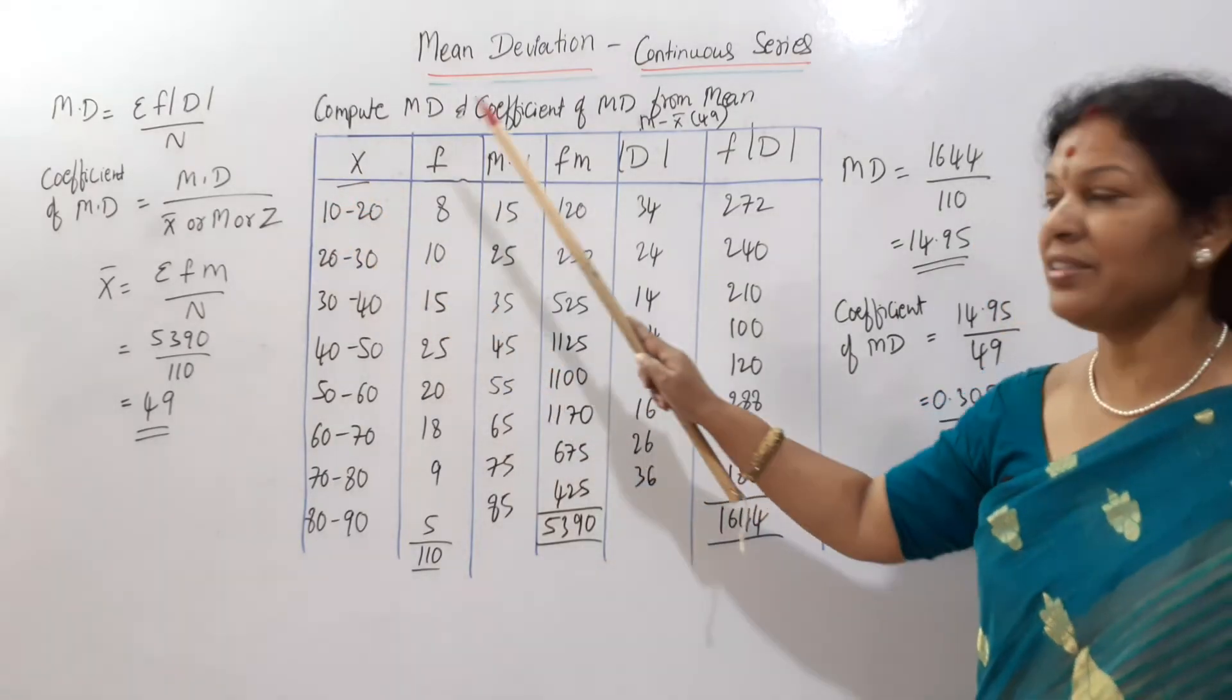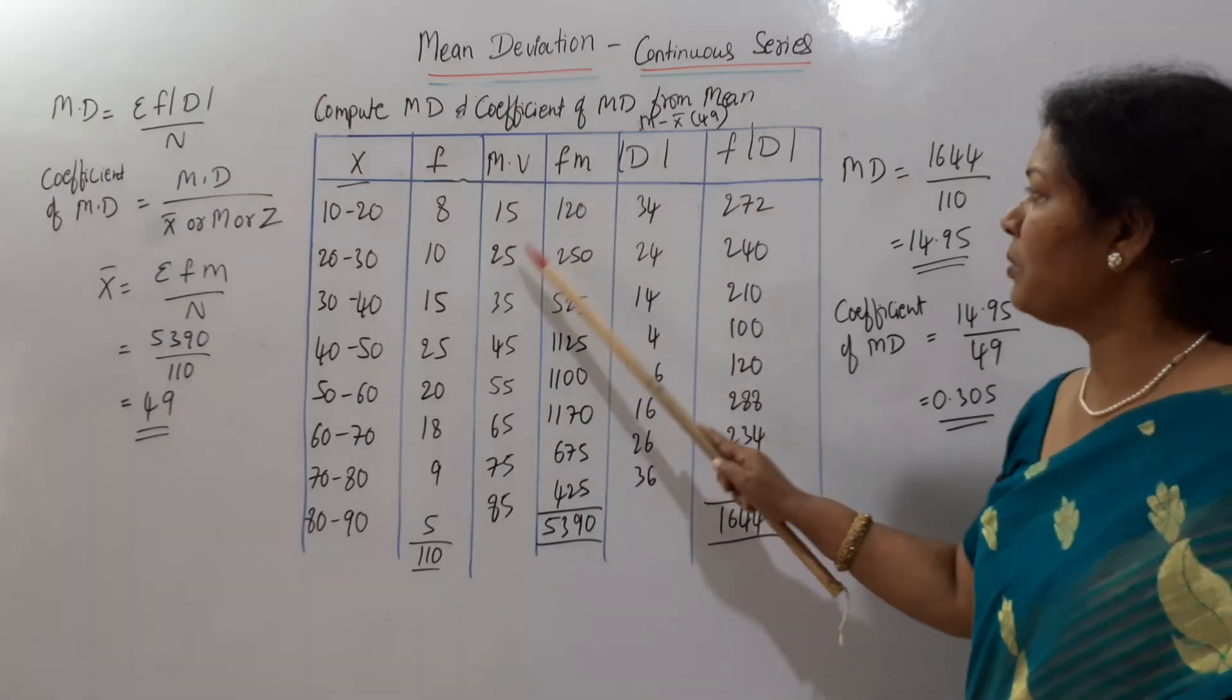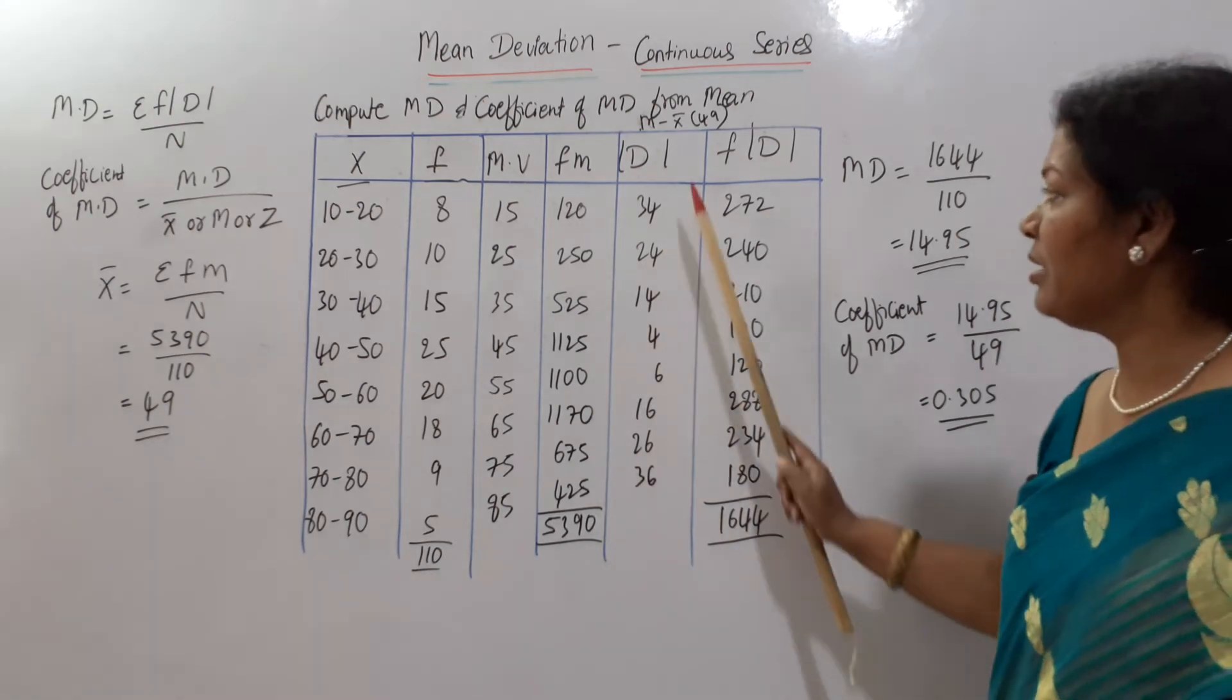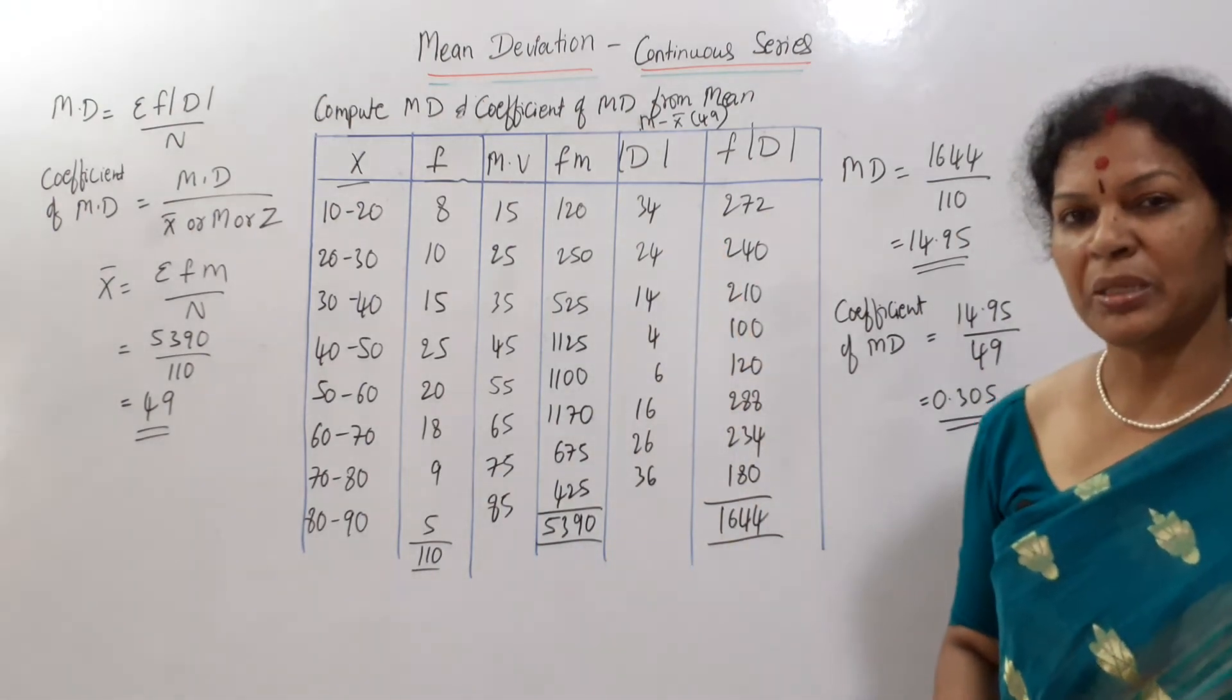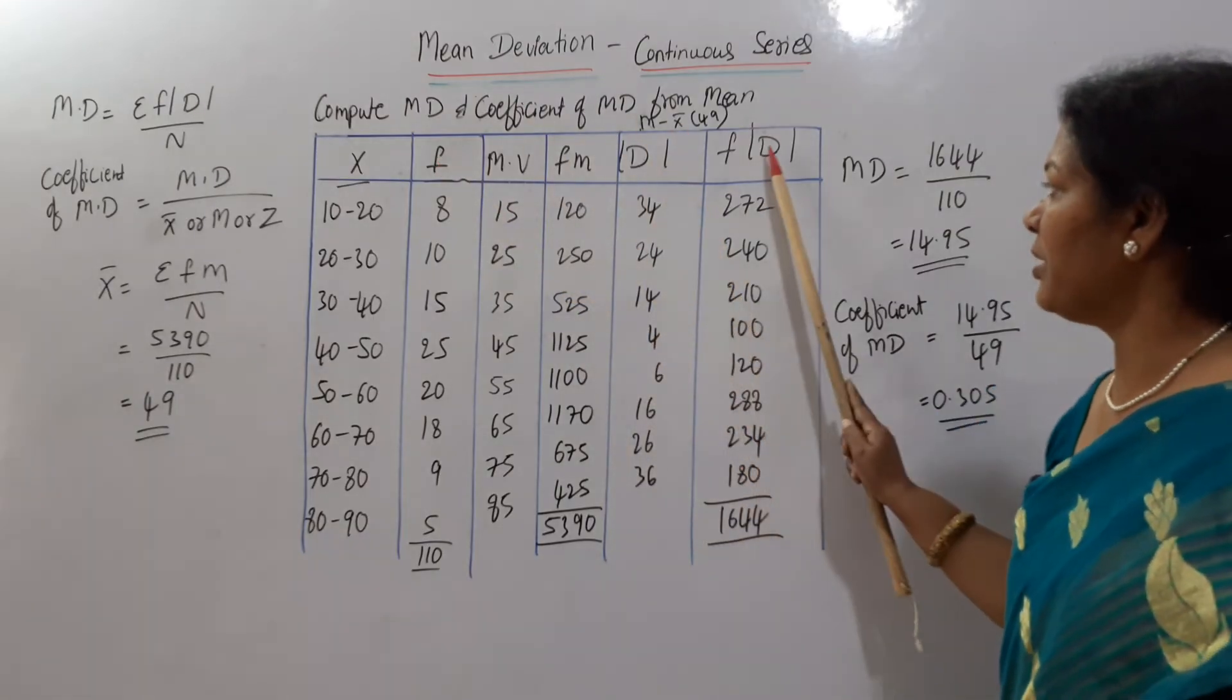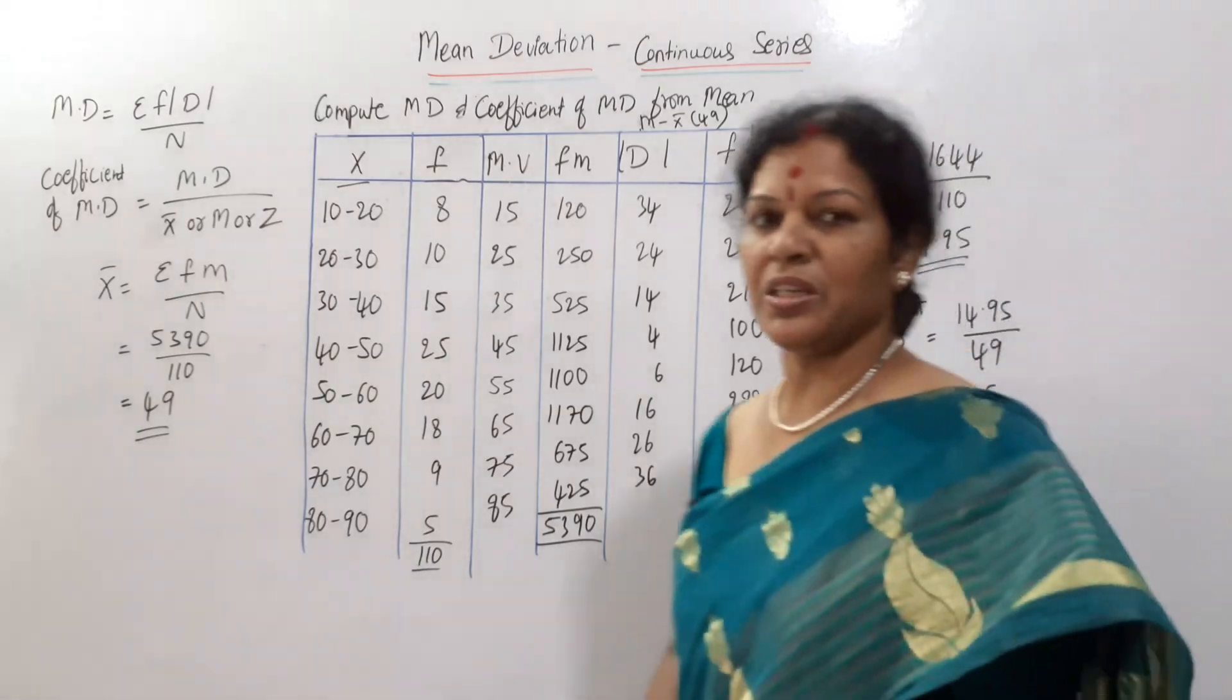Now here 15 minus 49, 34. 25 minus 49, 24. 34, 24, 14 like this you got mod d. Once if you get the mod d, immediately go for frequency into mod d. Frequency into mod d. So you get 1644 is the total. Once if you get, apply it in the formula.